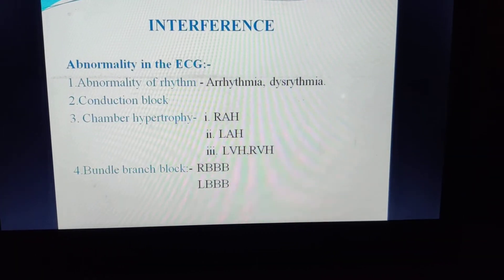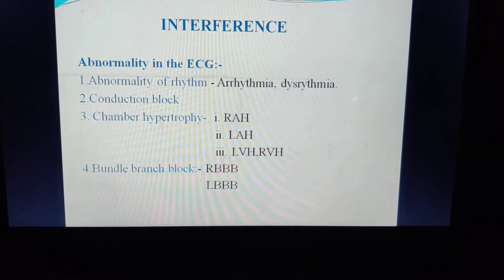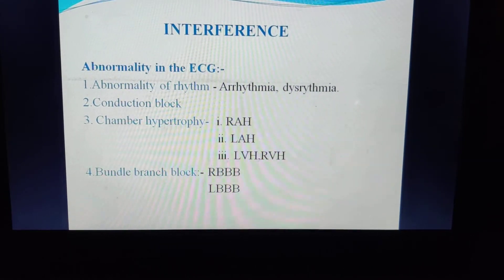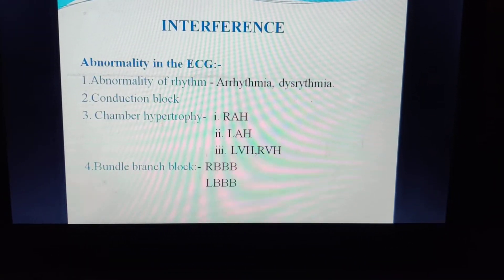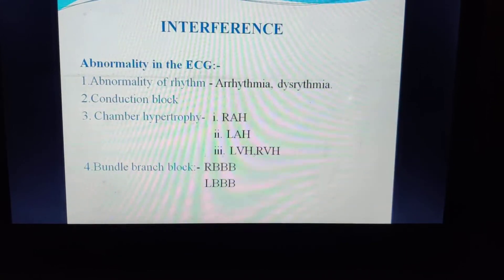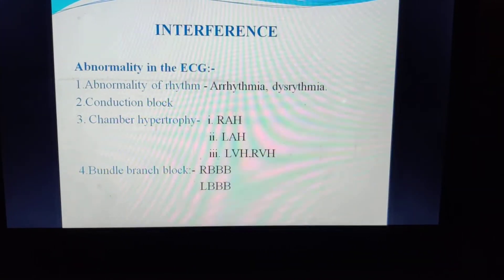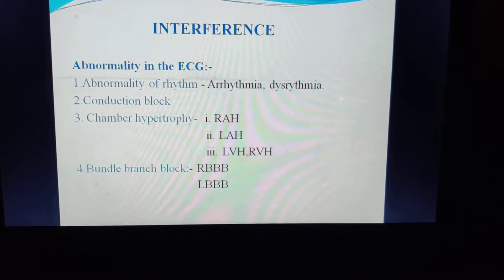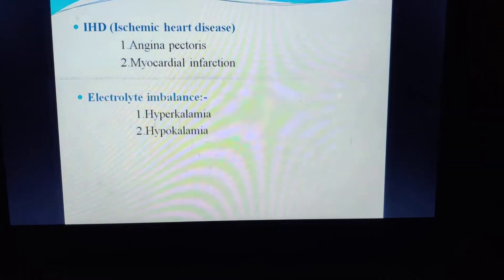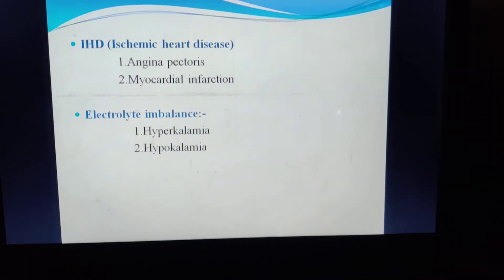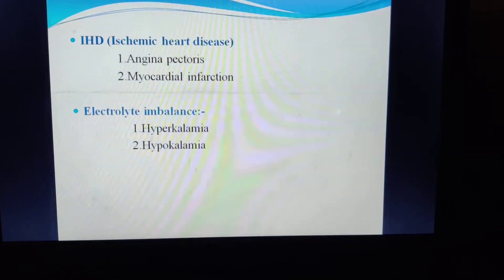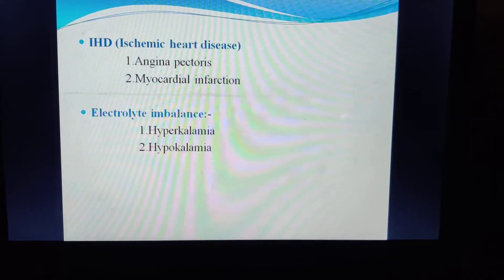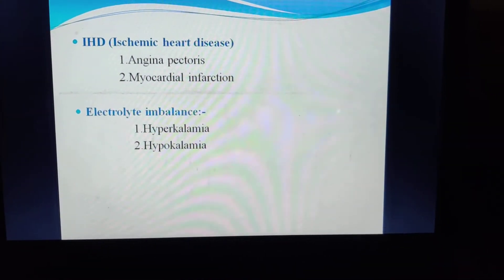Abnormalities in ECG can include rhythm abnormalities such as arrhythmia, conduction block, chamber hypertrophy (right atrium, left atrium, left ventricle, right ventricle hypertrophy), bundle branch block (right or left), ischemic heart disease — which is of two types: angina pectoris and MI (myocardial infarction) — and electrolyte imbalance such as hyperkalemia and hypokalemia.